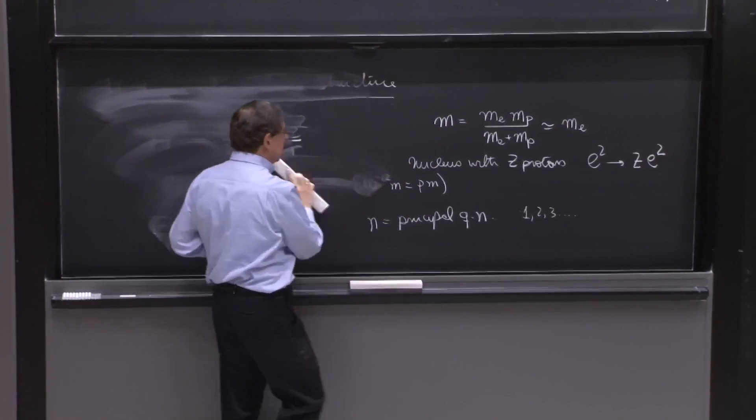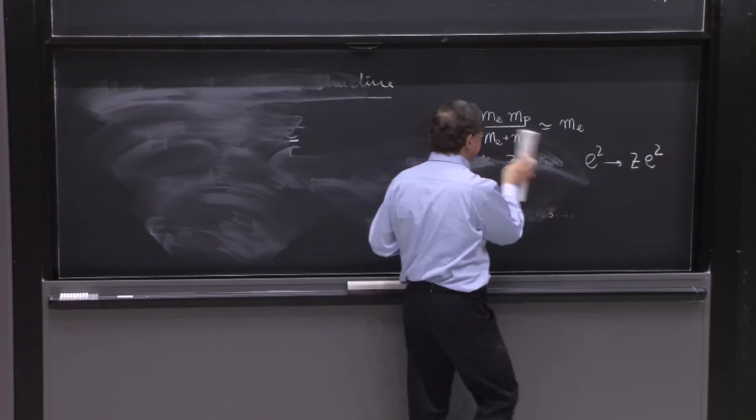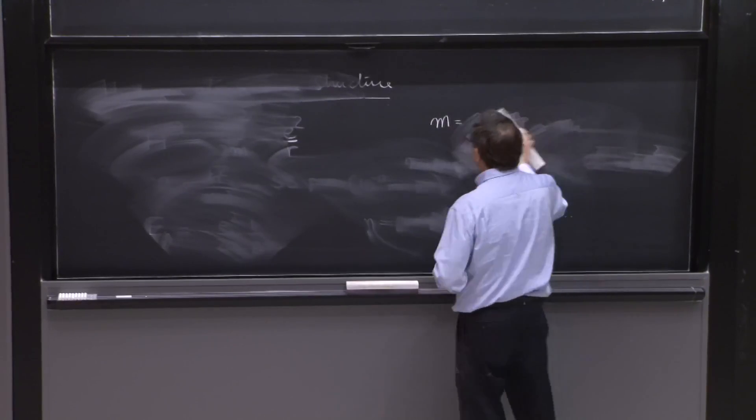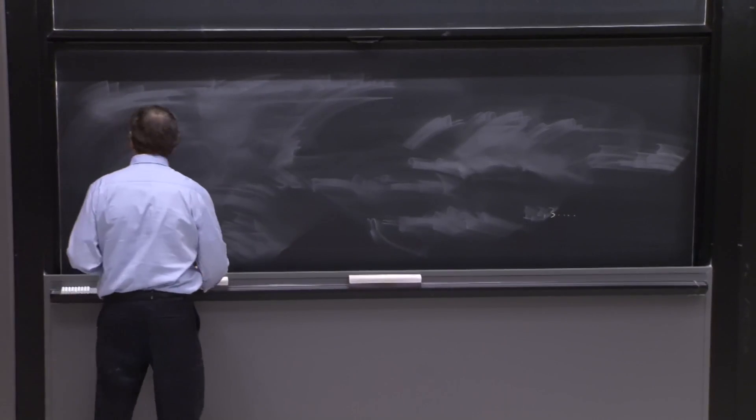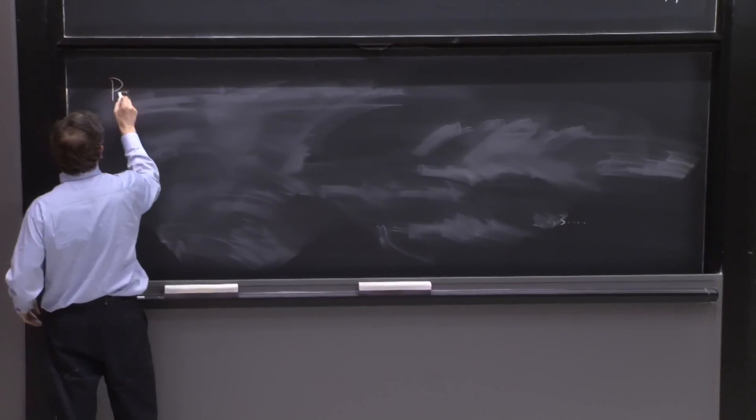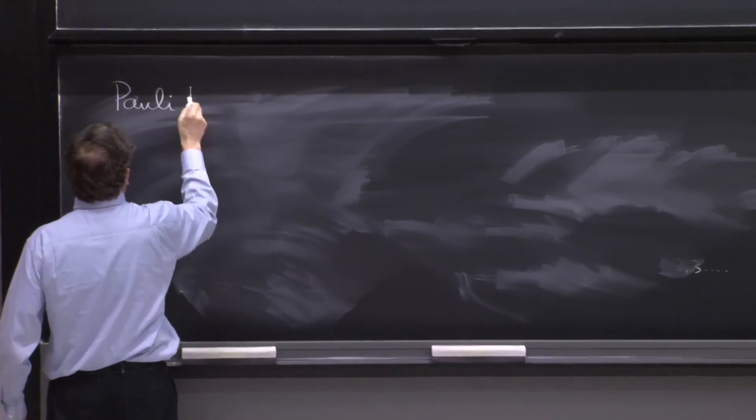We need to understand the electron a little better and understand the perturbations, the relativistic corrections. So we will consider the Pauli equation.